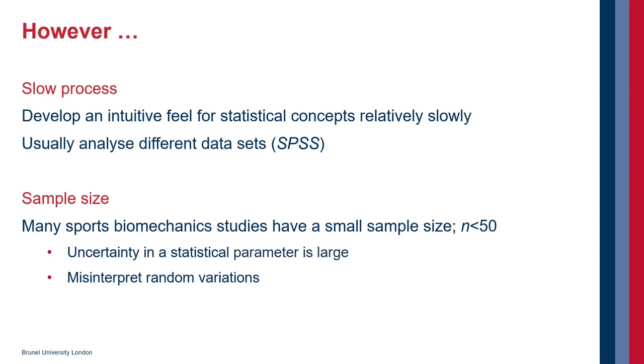And also we often have a problem with sample size. In sports biomechanics studies we have sample sizes of less than 50 and this means that the uncertainties in statistical parameters are large. And also we can have random variations of data and this can sometimes be misinterpreted by the student.